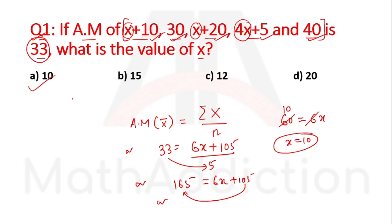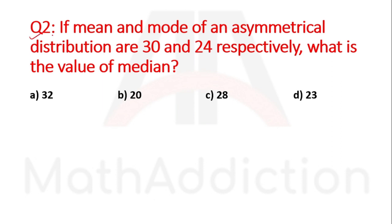Question number two: If mean and mode of an asymmetrical distribution are 30 and 24 respectively, what is the value of median? The mean is 30 and mode is 24.